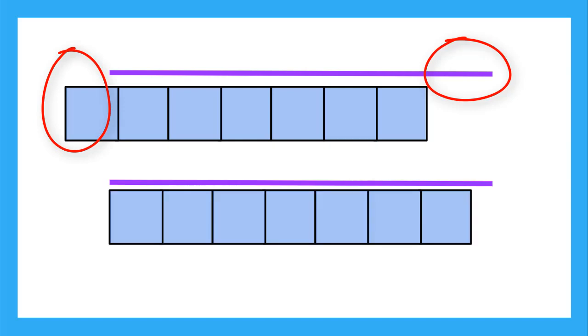We can never assume that this chunk of box is the same as the missing length. In fact, this purple line is longer than the 7 boxes.